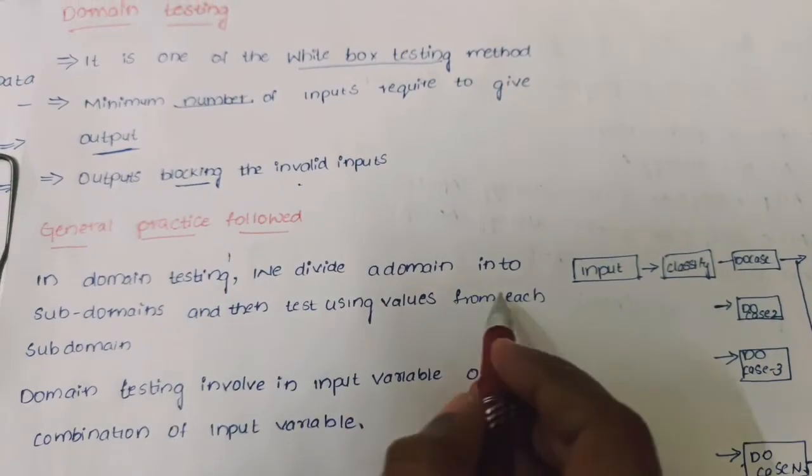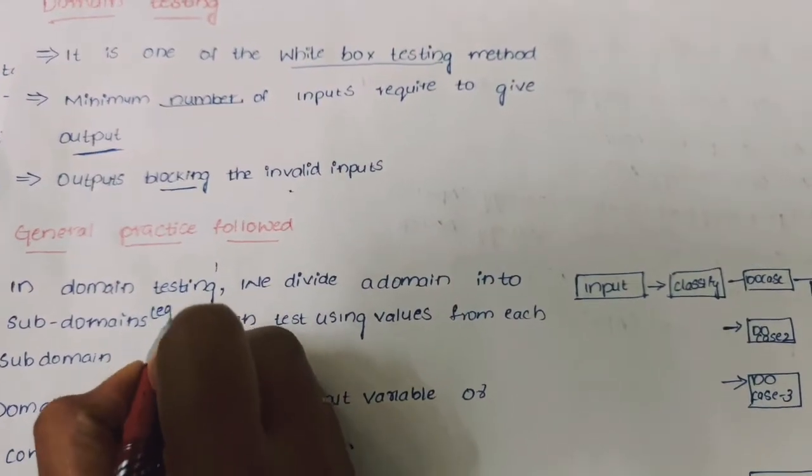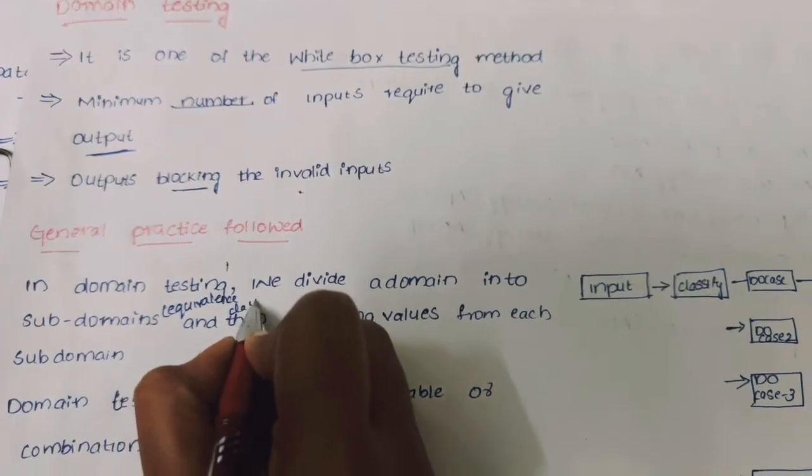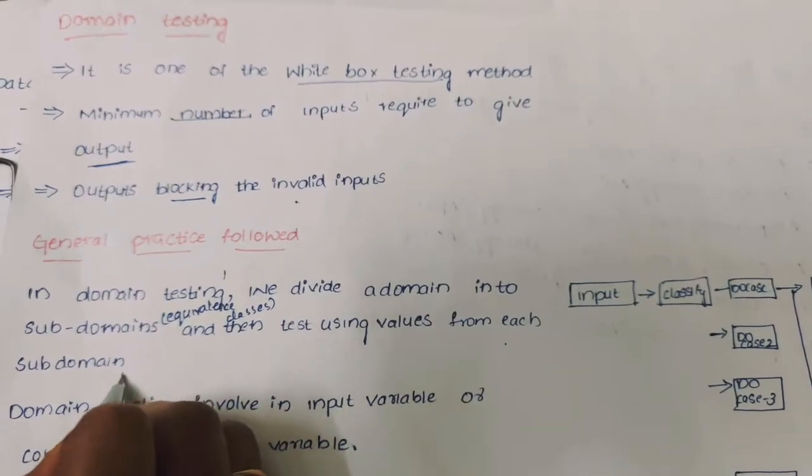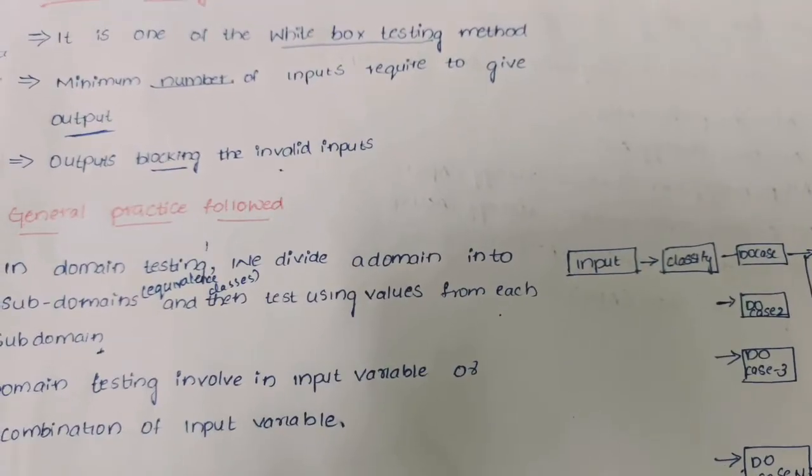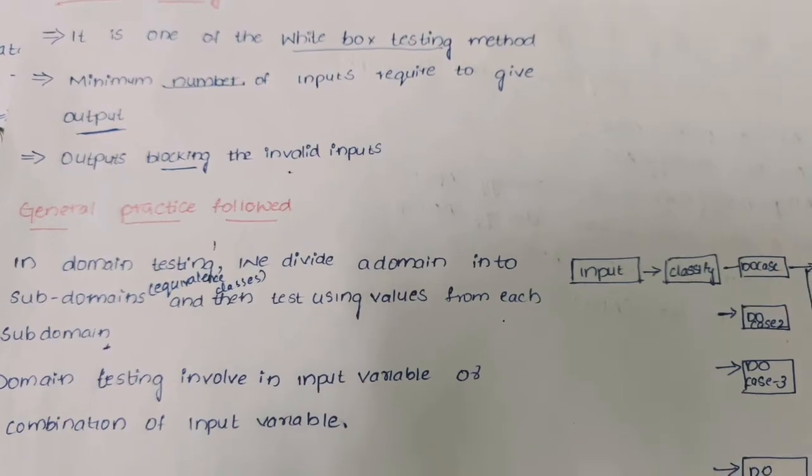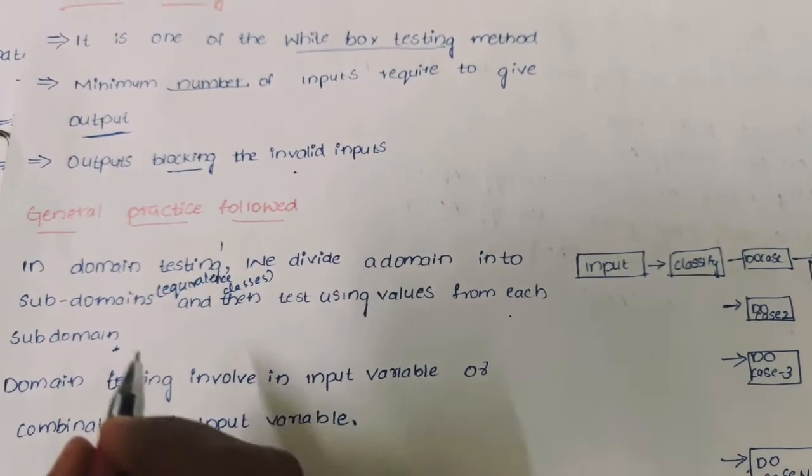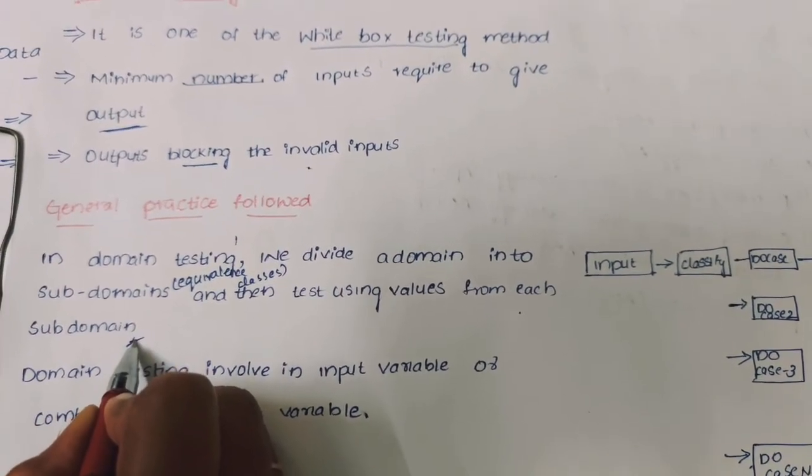Domain testing can be divided into sub-domains. We can say that equivalence classes and testing use values from each sub-domain. What is meant by this? We can take one part and divide that part into sub-parts. This is the meaning.